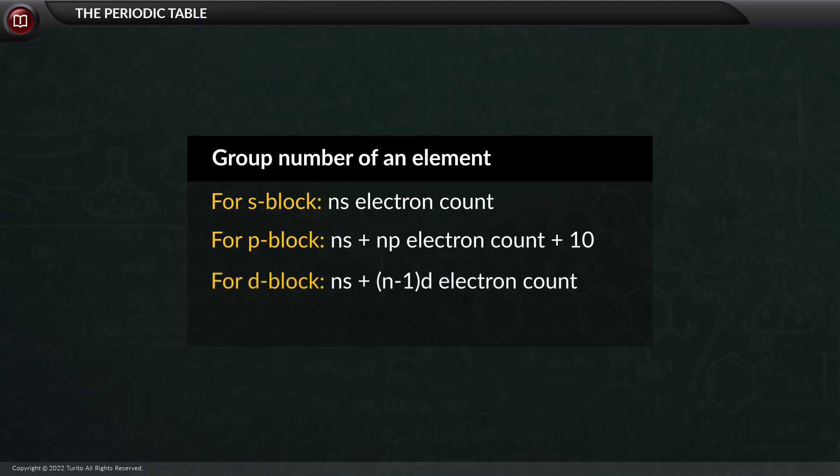For D-block, it is equal to the total number of electrons present in n-S and n-1 D-subshell. For F-block elements, they are all placed in group 3.